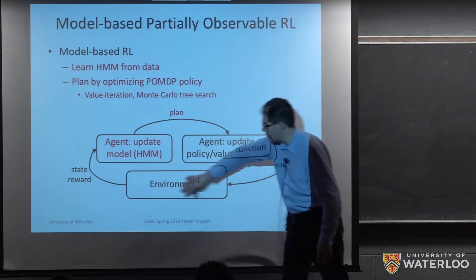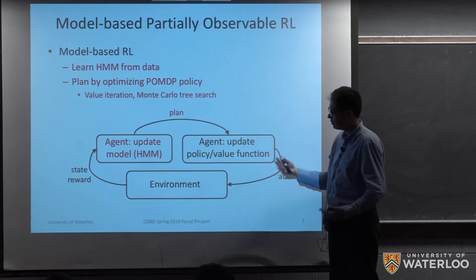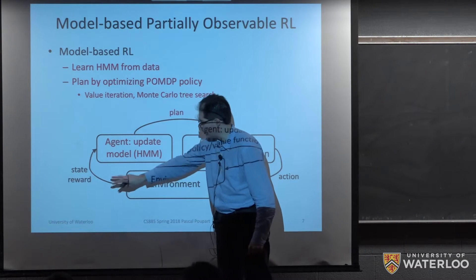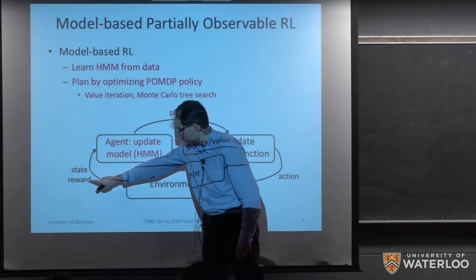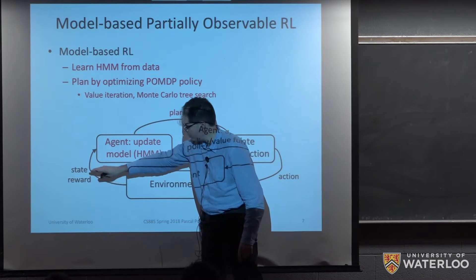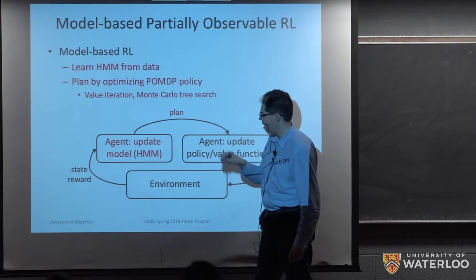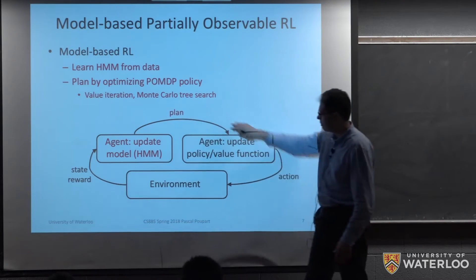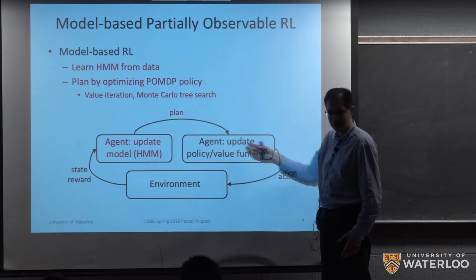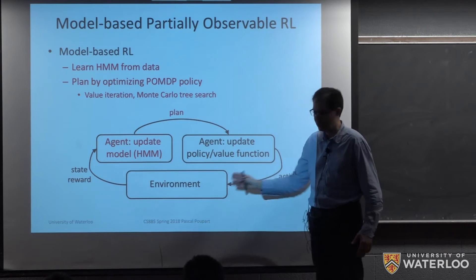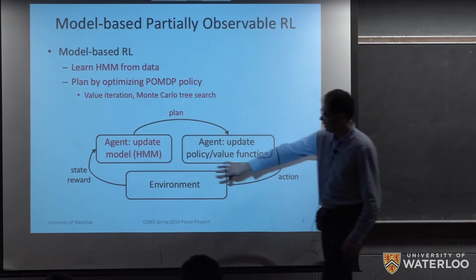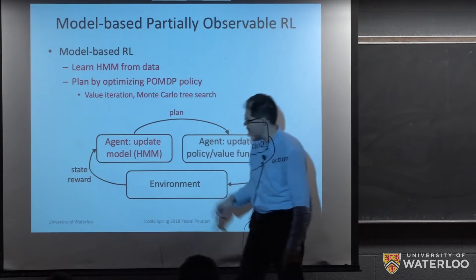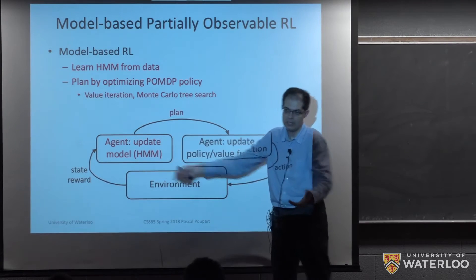Our model-based reinforcement learning graph is roughly the same as before. We've got the environment, and then — there's a typo here, this should not be the state — we would have reward and observation feeding into this. The model we would update would be essentially a hidden Markov model. After that, we do some planning that would lead to either a policy or value function, and then we execute an action that feeds back to the environment. The difference is that here we will not have a state — this is a typo again, it should be an observation — and our model is a hidden Markov model.